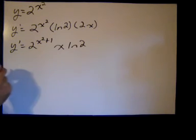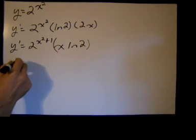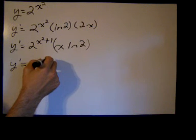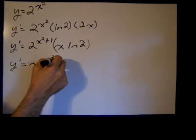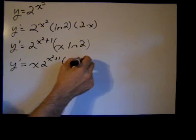And I am just going to reorder a little bit more because I like the way it looks. y prime equals x 2 raised to the power x squared plus 1 and then times the natural log of 2.